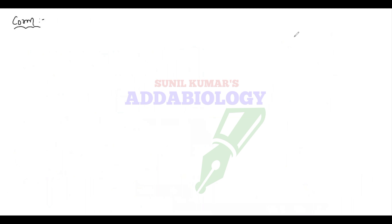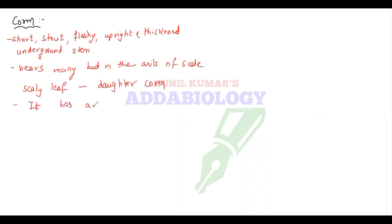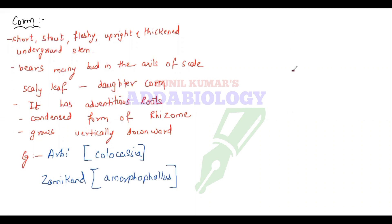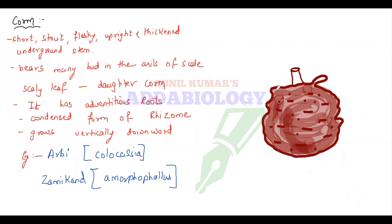The next underground modification is corm — in Hindi called suran. It is short, stout, fleshy, and upright — a thick underground modification. It bears many buds in the axil of the scaly leaves, has daughter corms and adventitious roots. It is a condensed form of rhizome, but unlike rhizome which grows parallel/prostrate, corm grows vertically downward. Examples: Arbi (Colocasia) and Zamikand (Amorphophallus), also called Elephant's foot.